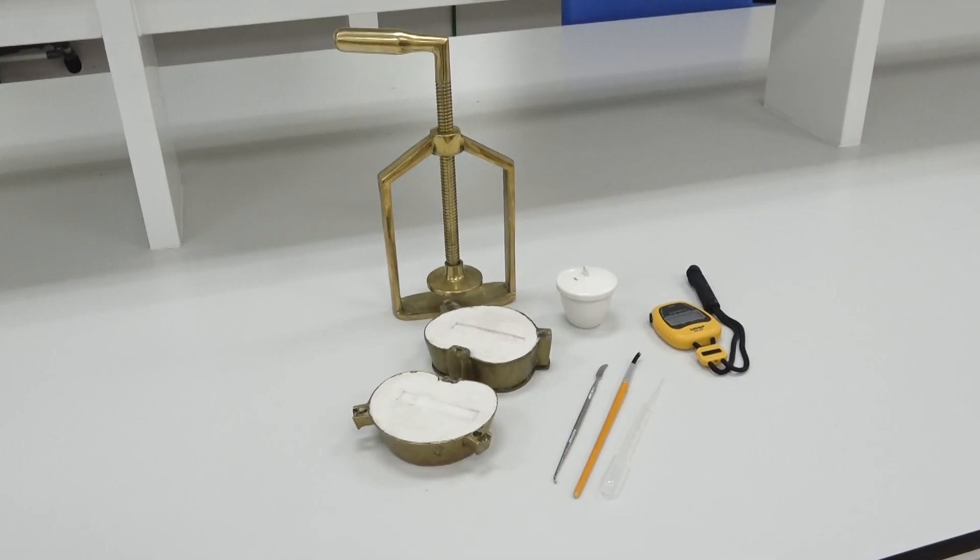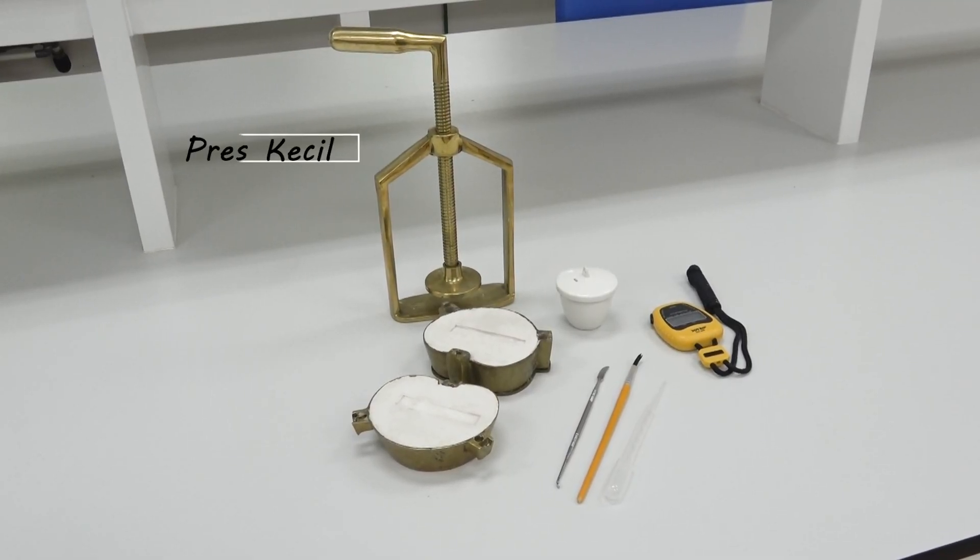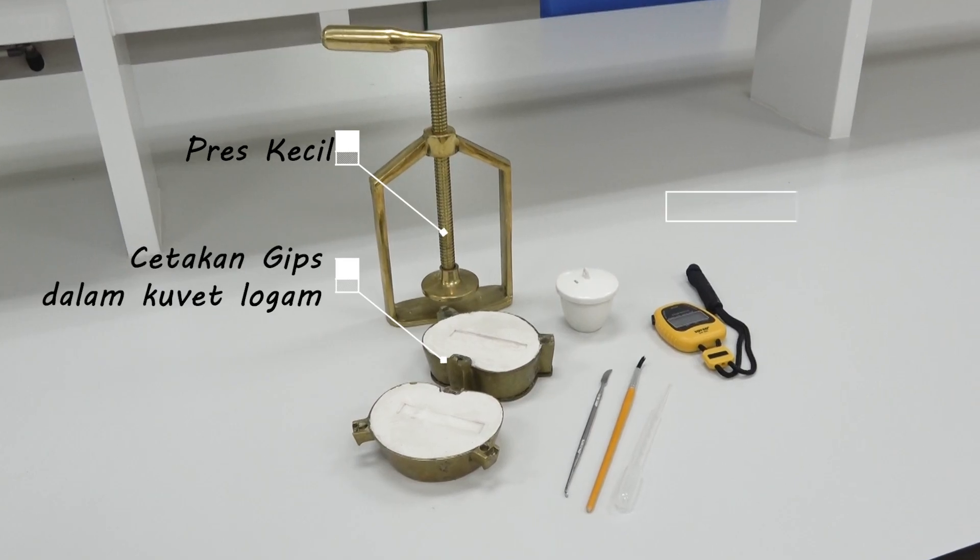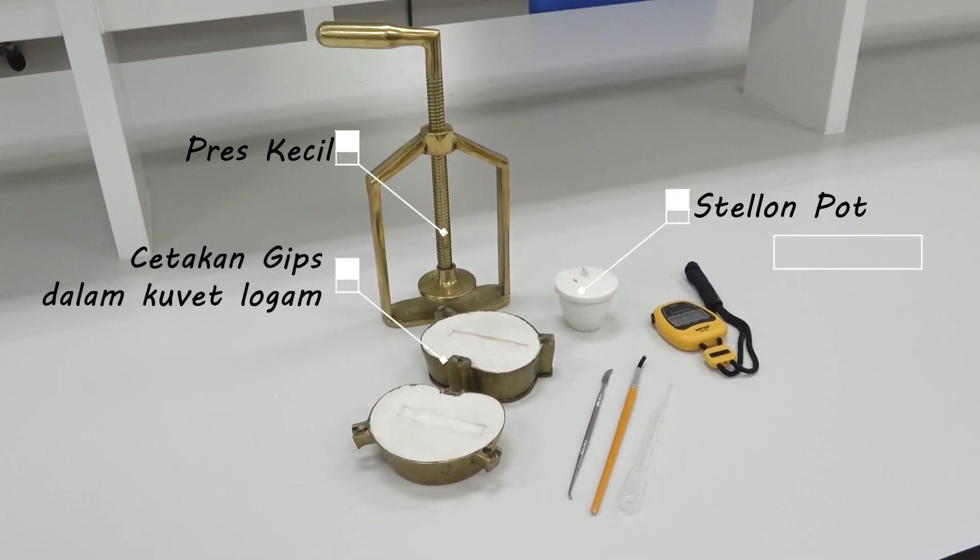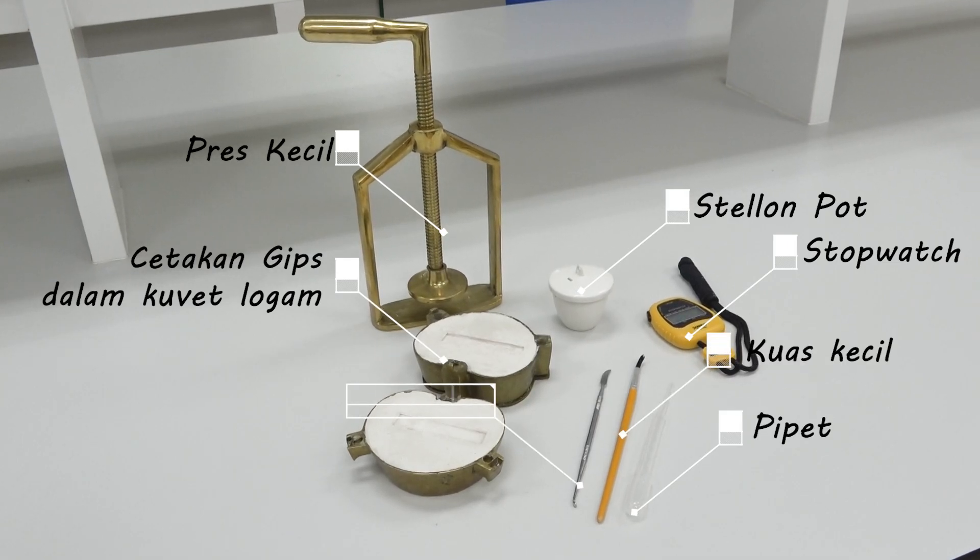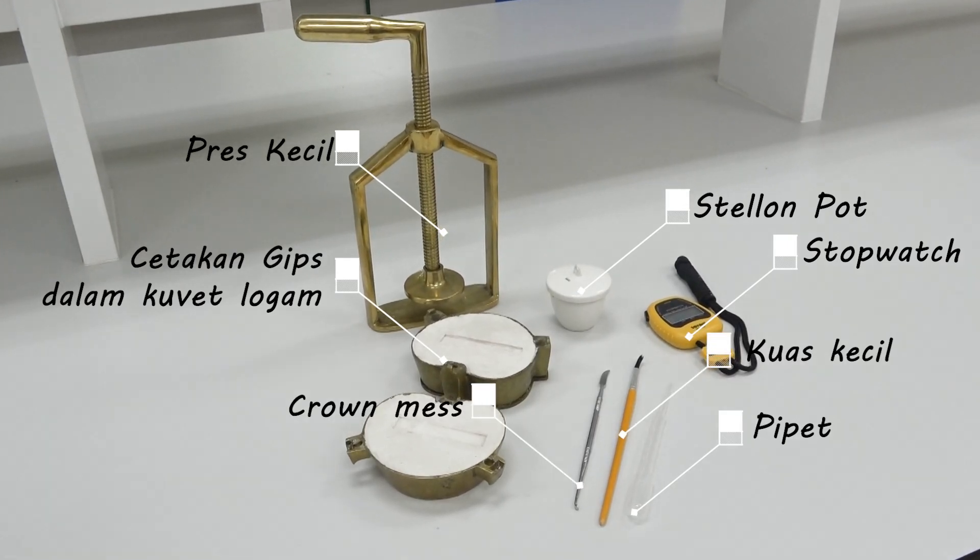Equipment used includes a small press, gypsum mold in flask, dappen dish, stopwatch, pipette, small brush, crown mesh, handscoon, and mask.